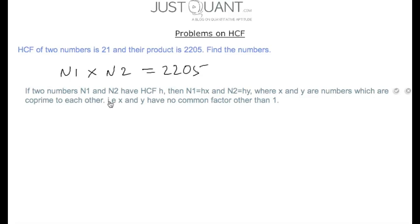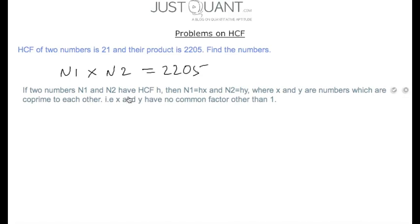If two numbers n1 and n2 have HCF h, then n1 = h × x and n2 = h × y, where x and y are co-prime to each other — that is, x and y have no common factor other than 1. Here the HCF is 21, so n1 = 21x and n2 = 21y.